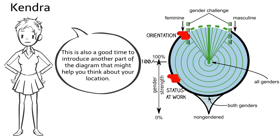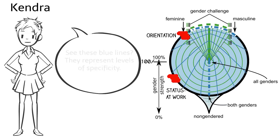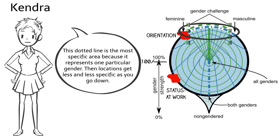This is also a good time to introduce another part of the diagram that might help you think about your location. See these blue lines? They represent levels of specificity. This dotted line is the most specific area because it represents one particular gender.